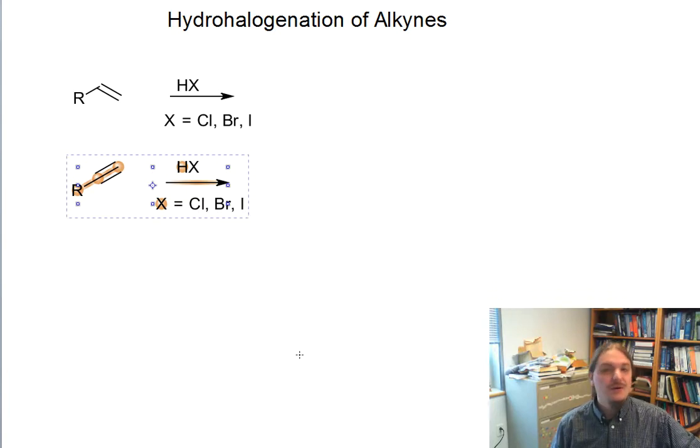Hello. In this video, we're going to talk about the hydrohalogenation of alkynes. You may remember that alkenes react with the hydrohalic acids, generically denoted HX, where X is usually chlorine, bromine, or iodine.